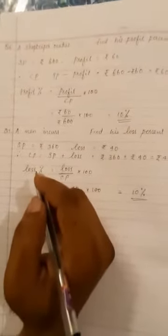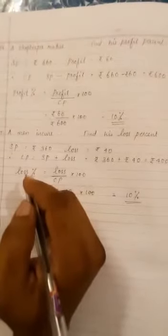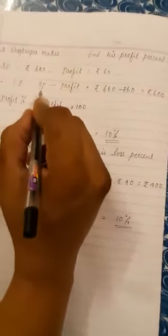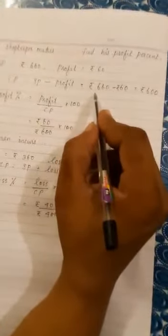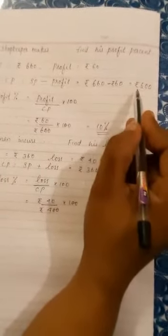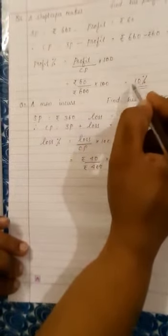A shopkeeper makes a profit of 60 rupees by selling a sweater for 660 rupees. Find his profit percent. Here the selling price is 660 rupees and profit is 60 rupees. Since profit and loss percentages are based on cost price, we first find cost price: cost price equals selling price minus profit, that is 660 minus 60, which is 600 rupees. Therefore, profit percent equals 60 upon 600 multiplied by 100, which equals 10%.